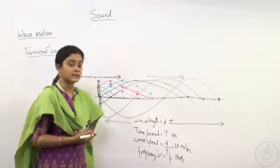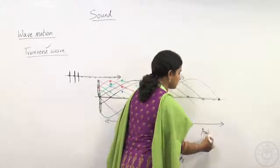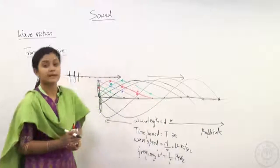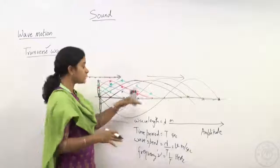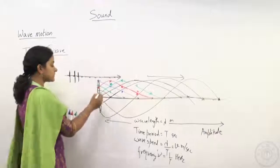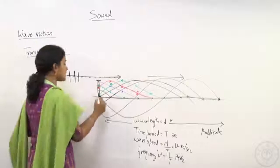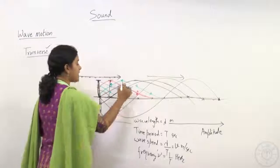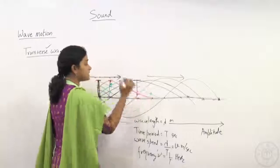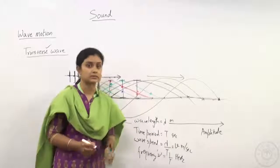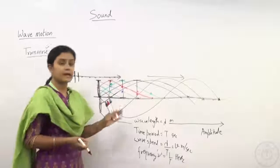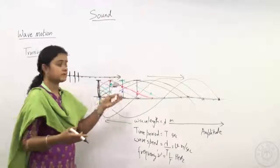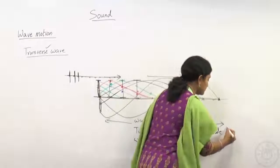Now about amplitude: what does amplitude of a wave mean? Amplitude is the maximum distance that any particle can move from its mean position when disturbed, generally denoted by A. Every particle in the medium gets displaced by the same amount — not at the same time, but by the same amount. So every particle has the same amplitude.